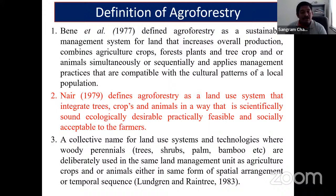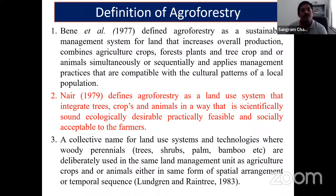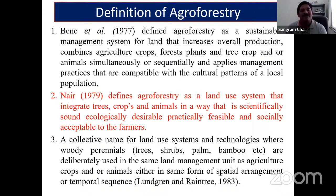P.K.R. Nair mentioned integrating agricultural crops and forage. Depending on the farmer's or animal's requirements, animals or livestock may also be incorporated or kept aside. In commercial agroforestry systems, generally agriculture crops and tree crops are integrated. The simplest definition of agroforestry is integrating agricultural crops with trees.